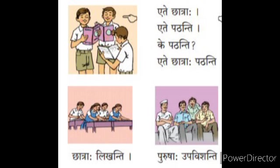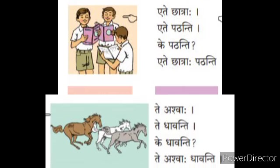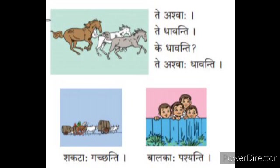Next, using te. Third picture: shakataha gachanti — bullock carts are going. Te shakataha. Te gachanti. Ke gachanti? Te shakataha gachanti. And the fourth: balakaha pashyanti — boys are seeing. Te balakaha. Te pashyanti. Ke pashyanti? Te balakaha pashyanti.